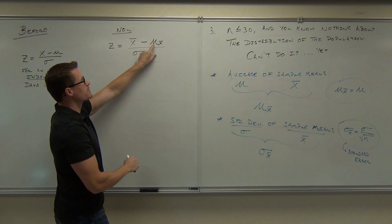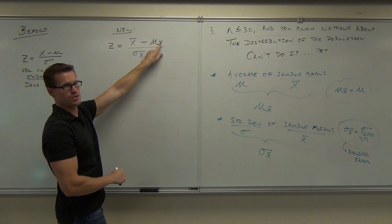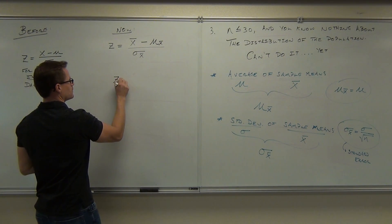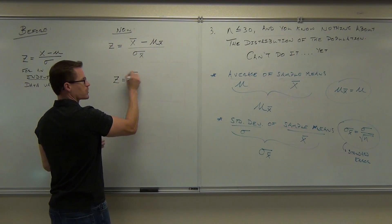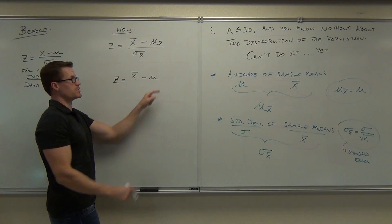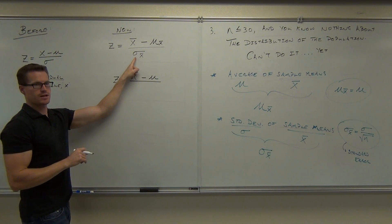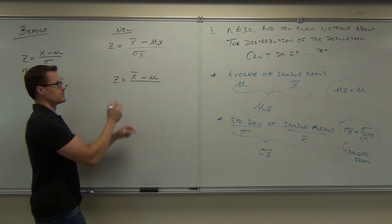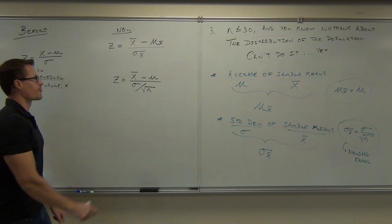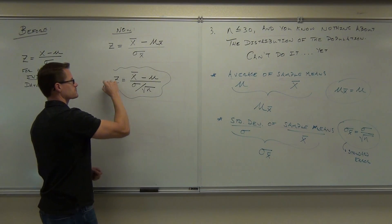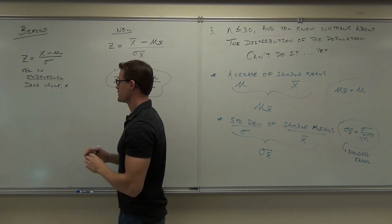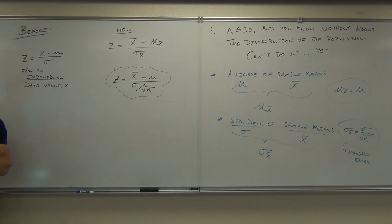You're going to use it after we translate it. How much is mu of x-bar actually equal to? Mu. X-bar is going to stay the same — we know how to find that. This is the same thing as mu. This right here is what we'll do to find the z-score of a group of data, of our sample. This was for an individual data value; this is for a group of data values, or in other words, a sample.